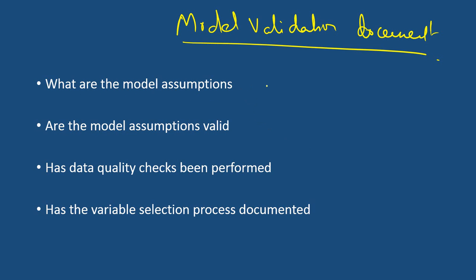The next checklist is what are the model assumptions. The model developer should have documented the model assumptions, and those assumptions should be valid, accurate, and approved by the competent authority. As a model validator, one should see whether these assumptions are based on industry best practices, theoretical appropriateness, and expert review. All these things should be in the model validation document.